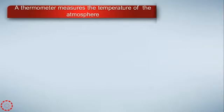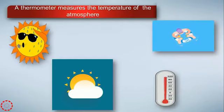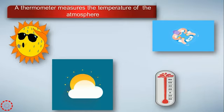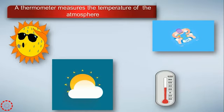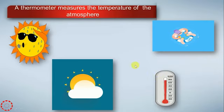A thermometer measures the temperature of the atmosphere. It tells us the degrees of temperature. For example, in the summer when we feel hot, the thermometer tells us the temperature of that day is very high.